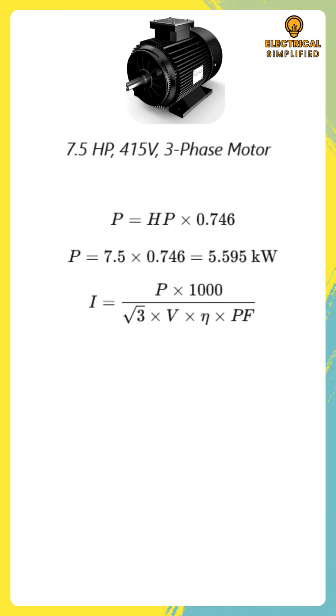Current equals power multiplied by 1,000 divided by root three times voltage times efficiency times power factor. Now, substituting the values, power equals 5.595 kilowatts, voltage equals 415 volts, efficiency equals 0.85 and power factor equals 0.8. After calculation, the full load current is approximately 11.6 amperes.